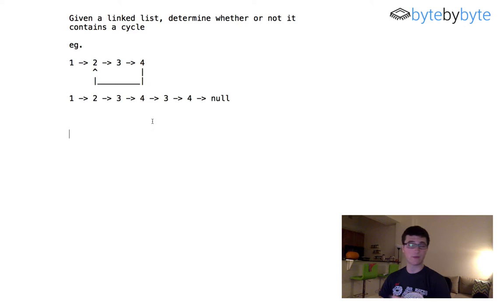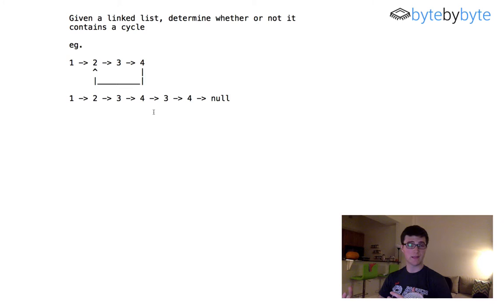Let's dig into what this problem is actually going to involve. The first thing, as always, we want to do is clarify any confusion we might have about the problem. One question we might ask is whether this is a singly or a doubly linked list. In this case it looks pretty clearly from the drawing like we're going to be doing this with a singly linked list, but if you have the option to do a doubly linked list then that could potentially make your life a lot easier.